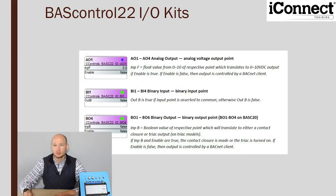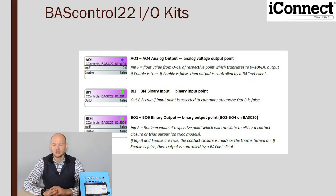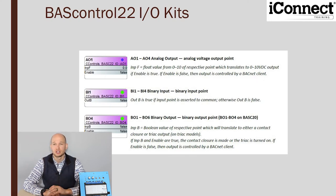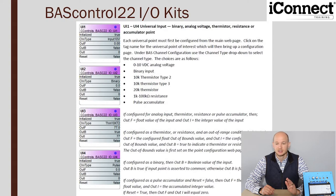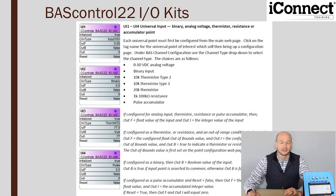Taking a closer look at the analog and binary inputs and outputs — what you see on screen are the individual components. When you select a component and drag it to the wire sheet, this is what you're going to see. The universal points have a wider range of usage: we can utilize them for analog voltage, binary input, thermistors, resistance, and accumulators. There's a very wide range for the universal points.